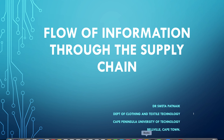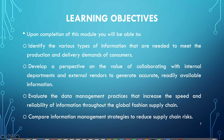The chapter we are going to discuss today is on flow of information — how information flows throughout the supply chain. On completion of this module, I expect you all to know about the types of information around production and delivery demands, the value of collaborating with internal and external vendors, data management practices, and how to evaluate them in order to increase the speed and reliability of the global fashion supply chain.